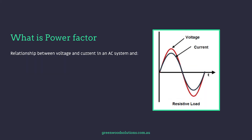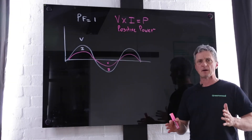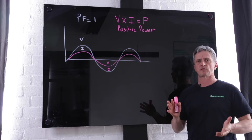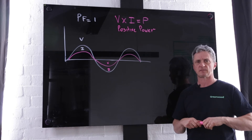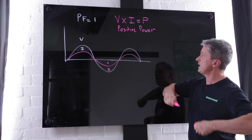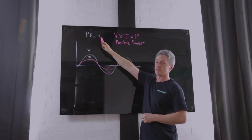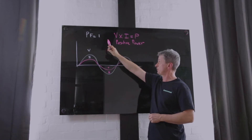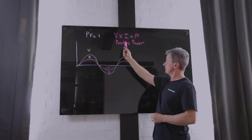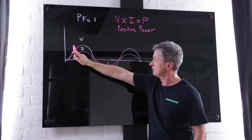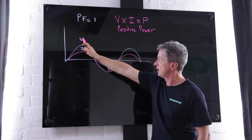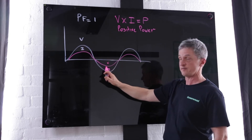So what's power factor? Effectively it's a relationship between the voltage and current in an AC system. We've come over to the board to go through what power factor is — real, apparent and reactive. In this situation we have a power factor of one. This is not real, this never really happens, but we assume the site has purely resistive loads, so we have a power factor of one, which means voltage and current are always in phase.